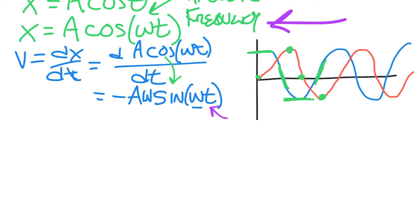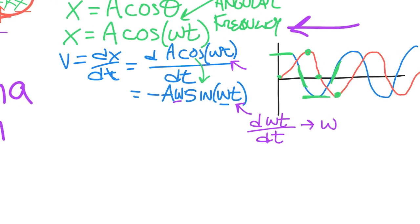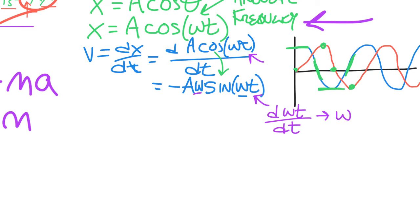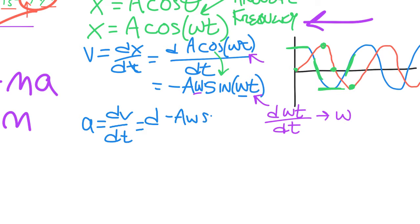Because our argument is ωt and not just t, we must use the chain rule and take the derivative of what's inside: the derivative of ωt is just ω, which is why we get that extra ω factor. After all that, we have the velocity function. Now we need to take another derivative to get acceleration. Acceleration is the derivative of the velocity function with respect to time, which is the derivative of minus Aω sine(ωt).